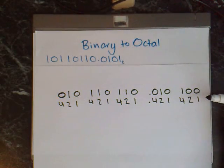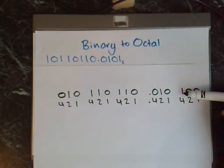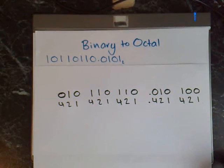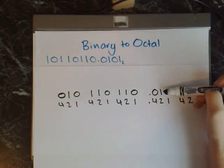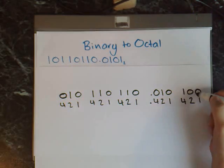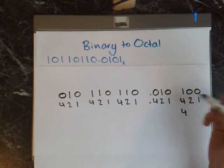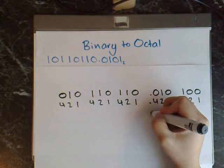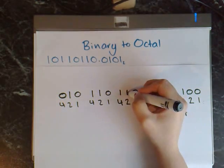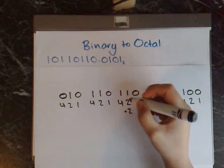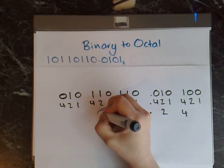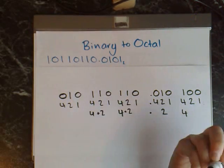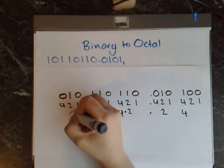Now we just need to multiply the top digits by the bottom digits. To make this quicker, anything multiplied by 0 gives 0, so we'll just multiply the ones that have a 1 digit on top. So 1 times 4 gives us 4, 1 times 2 gives us 2. Keep the decimal. Then 1 times 2 gives us 2, plus 1 times 4 gives us 4. Then 1 times 2 gives us 2, plus 1 times 4 gives us 4. And 1 times 2 gives us 2.